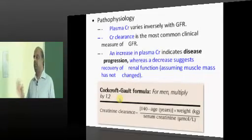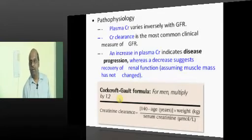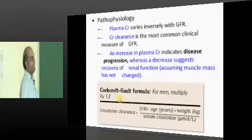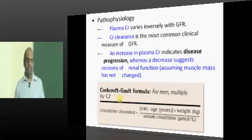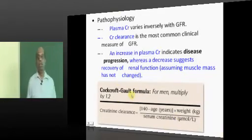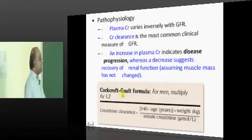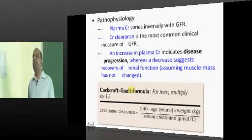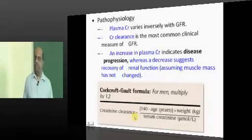Plasma creatinine is a very important indicator of GFR. Higher creatinine means lower GFR — they are inversely related. We calculate creatinine clearance, which is an important measure of the progression of chronic renal failure. In this context, you must know the Cockcroft-Gault formula, by which you can calculate creatinine clearance.